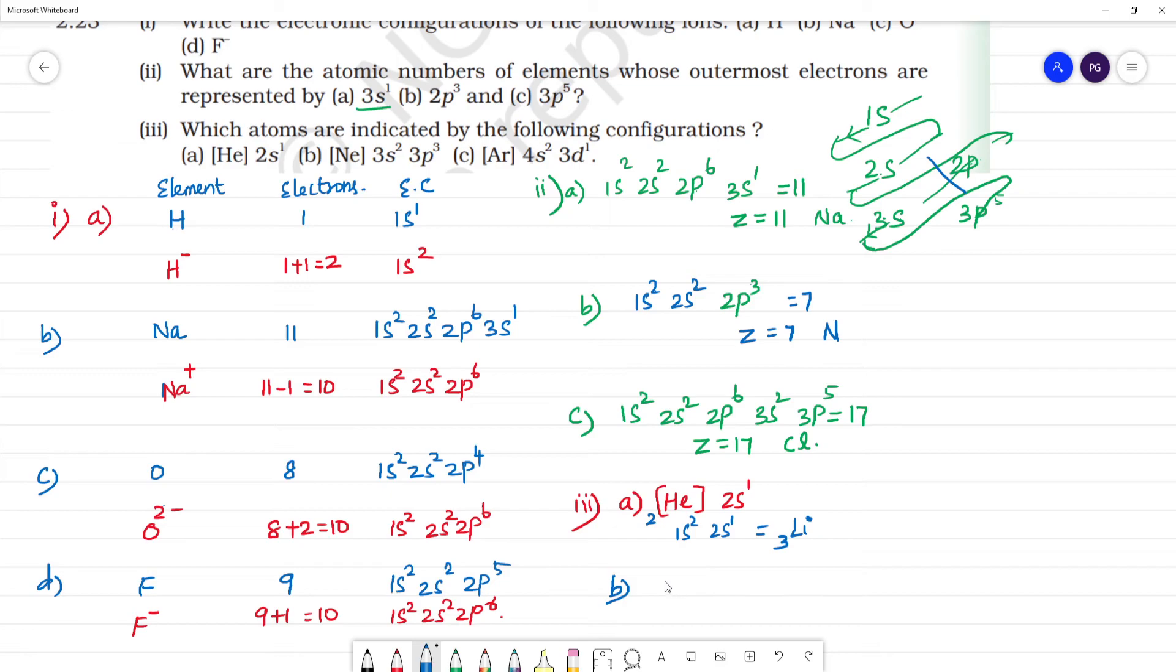B is neon gas configuration with 3s2, 3p3. Neon has atomic number 10. Number of electrons is 10 plus 2 plus 3, so total number of electrons is 15. 15 electrons means this is phosphorus.